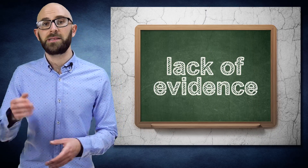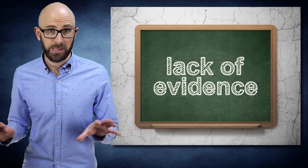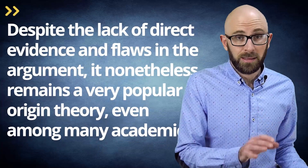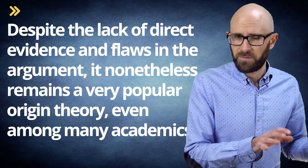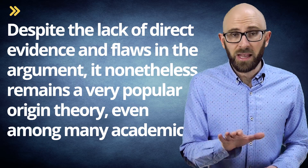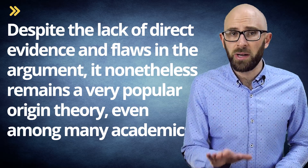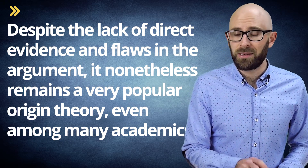The problem with Moore's explanation is that there is no direct, documented evidence to support it. More speculatively, people translating the works would not care about phonetics but the meaning of the words, so whether they had a 'sh' sound or not would seem irrelevant. Despite the lack of direct evidence and flaws in the argument, it nonetheless remains a very popular origin theory, even among many academics — and a quick Google search will find many a PhD in mathematics parroting this same theory.